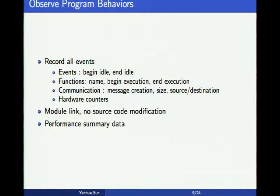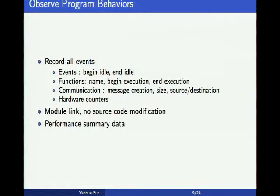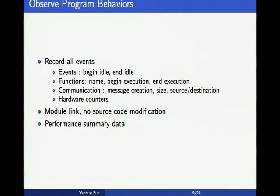After registering control points, PICS needs to observe program behaviors. Since our control system and runtime take full control of application execution, it's easy to record all events. Important events include begin and end idle time, which tells us how busy each processor is and what load balance looks like. We also record function execution time to get statistics on maximum, minimum, and average execution time. For communication, we record message creation, size, source, and destination to determine whether communication is a bottleneck.